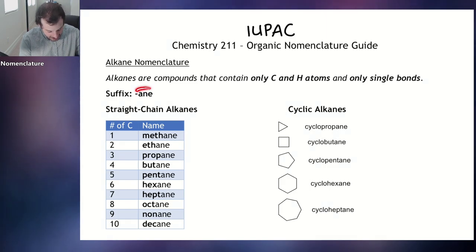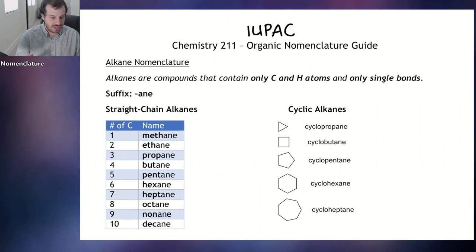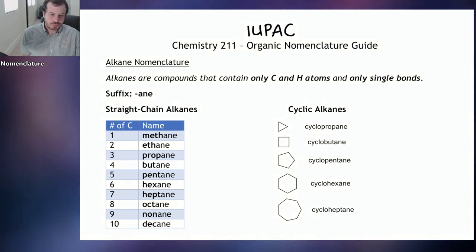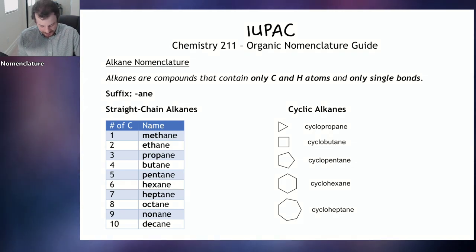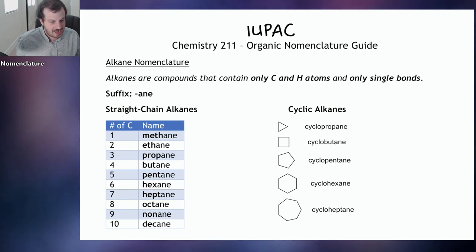Alkanes are named with the ending '-ane,' which stands for alkane. There are two flavors of alkanes: you can have straight chain alkanes that are just an open line, or you can have cyclic alkanes, which are rings — just carbon and hydrogen arranged in a ring so that the two ends are tied together. Depending on the number of carbons in your alkane, the name will change.